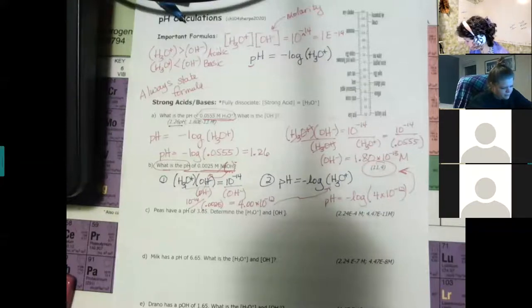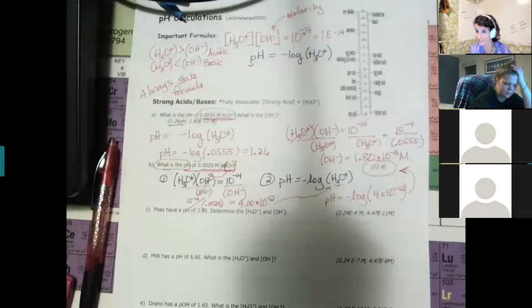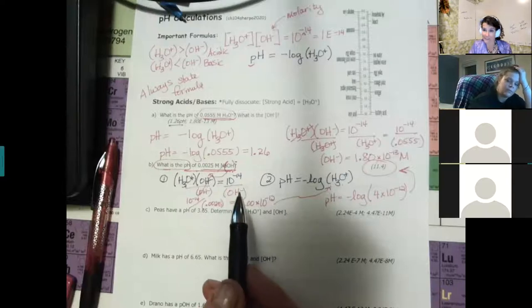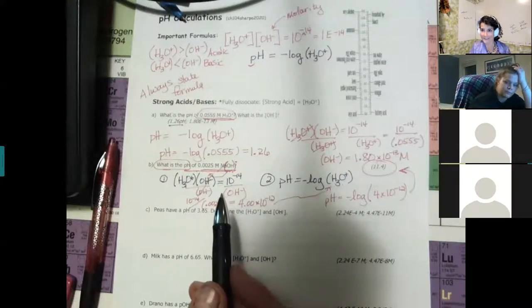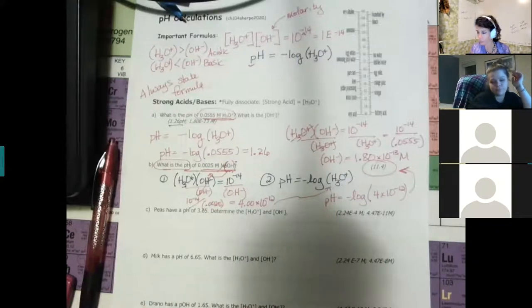The answer makes sense: pH is above 7, so it's basic — and we were dealing with NaOH. NaOH is a base, sometimes called lye, which burns because it's strongly basic.